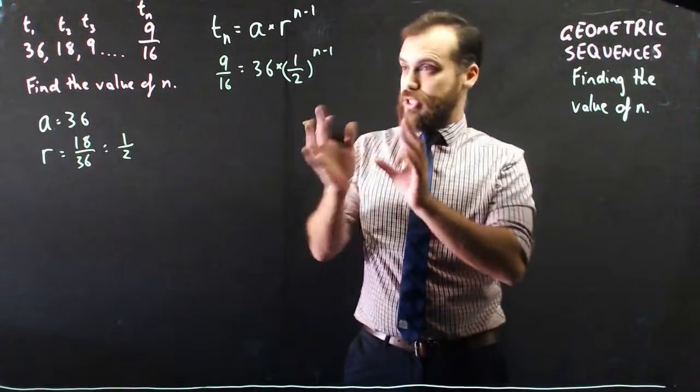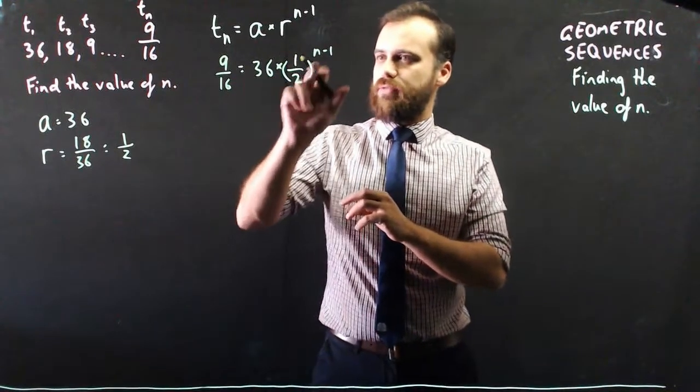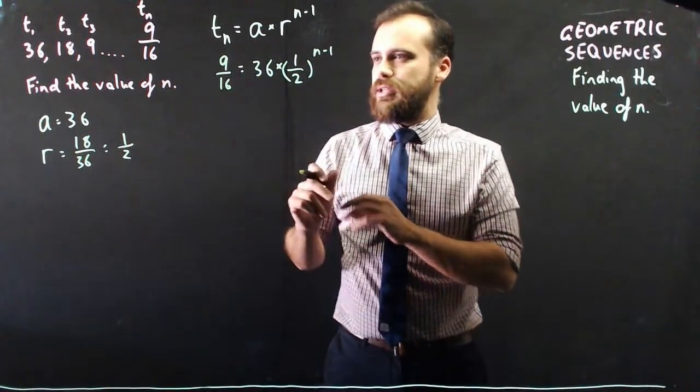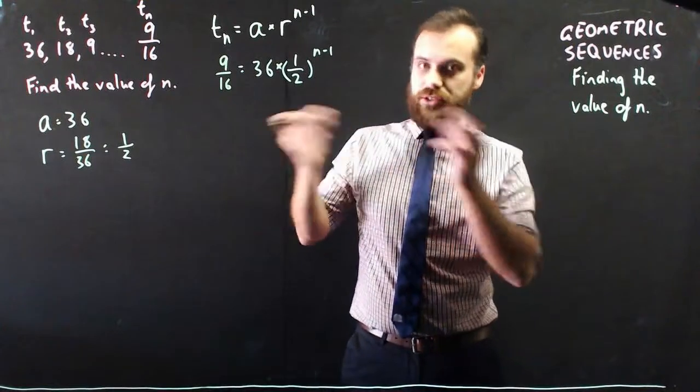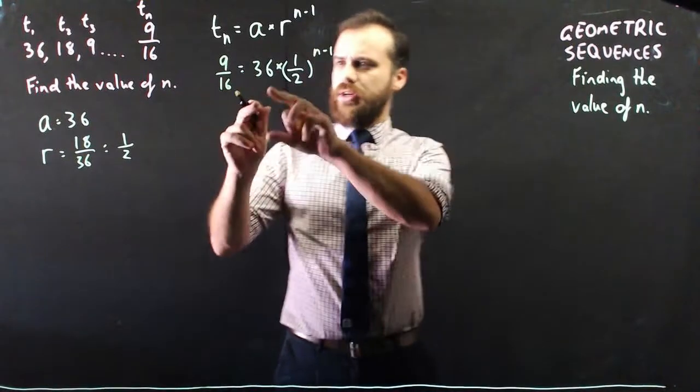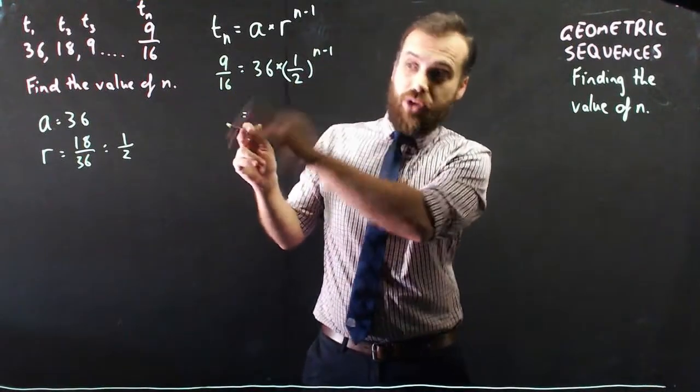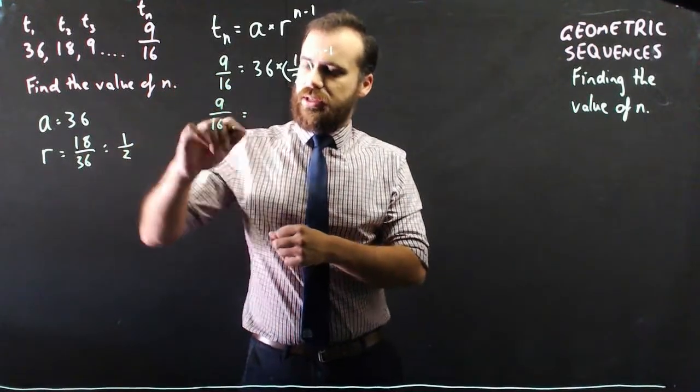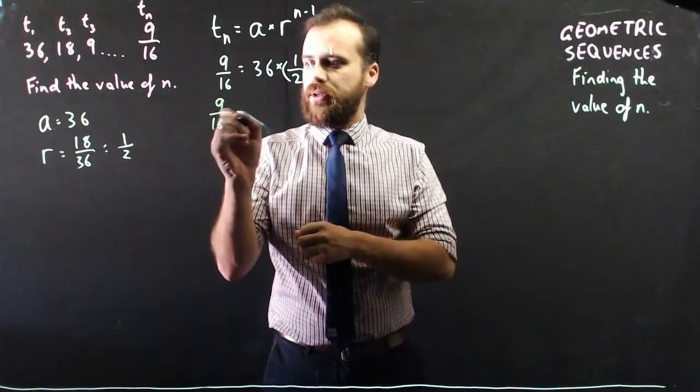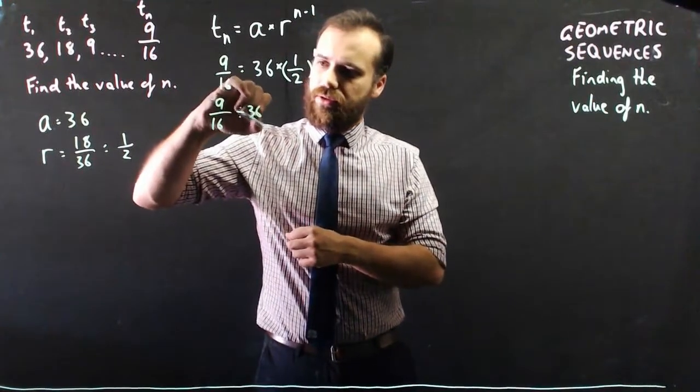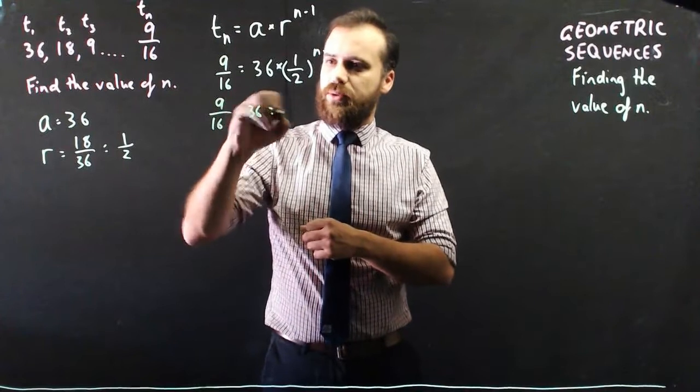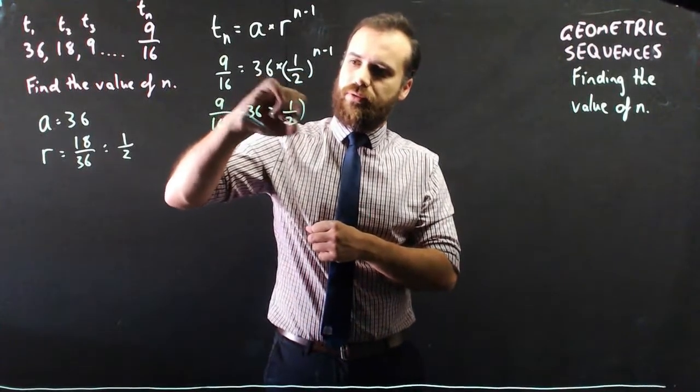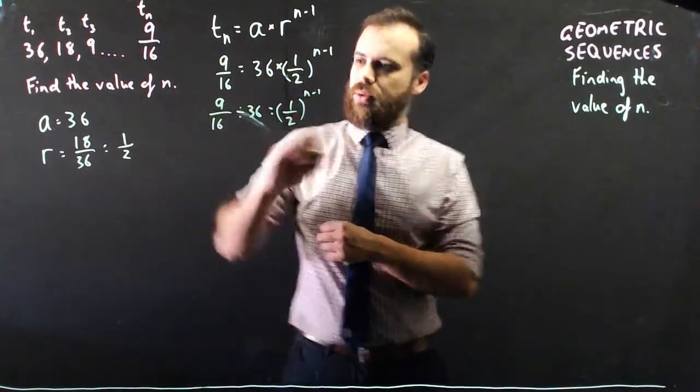Alright, so finished up now. We've got 36 times one half to the power of n minus 1 equals 9 on 16. We just need to start rearranging this and solving. So I can get rid of the 36 by dividing by 36. So 9 on 16 divided by 36 equals one half n minus 1.